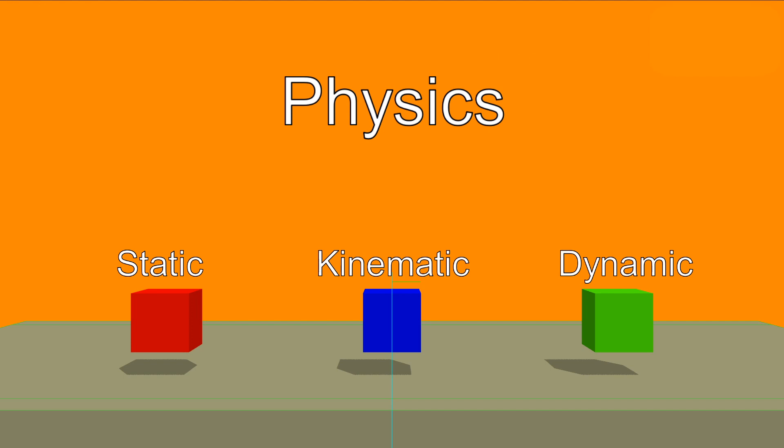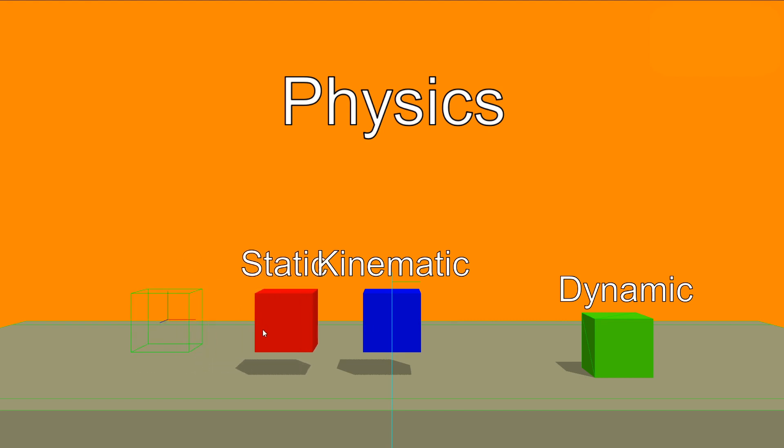So we enable the debug mode which allows us to see all the collision shapes and let's turn on a dynamic object and as we've seen before the kinematic object collides with a dynamic object and moves it. With static object if we force a movement on a static object we can see that the static object moves but it doesn't collide with a dynamic object.